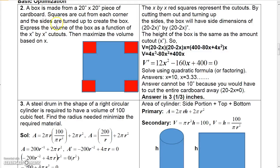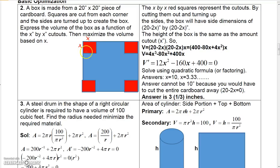Here's another example with a box made from cardboard that is 20 inches by 20 inches. We cut out these square corners of size x by x from each corner, then fold up the sides to make a box. We want to express the volume of the box as a function of x, then maximize the volume.